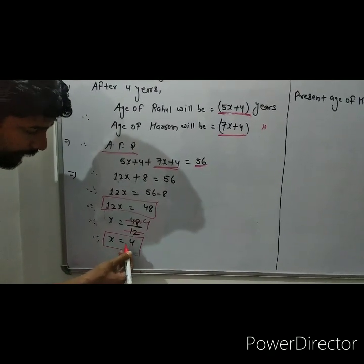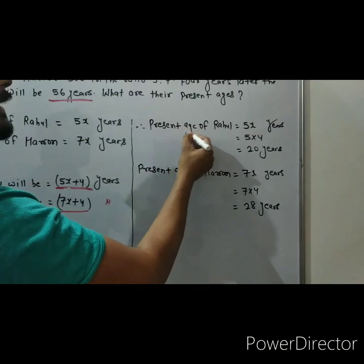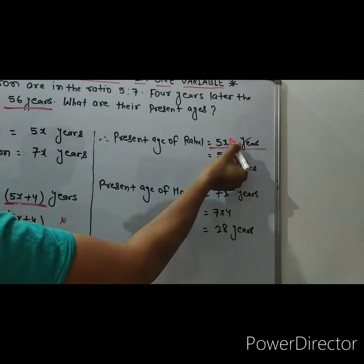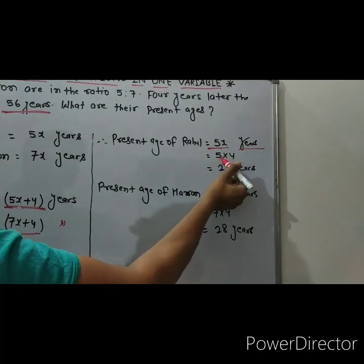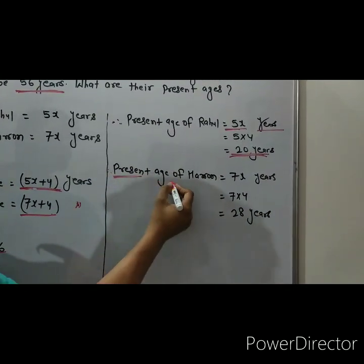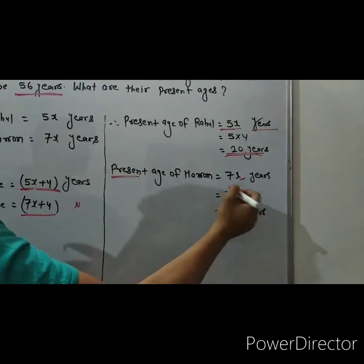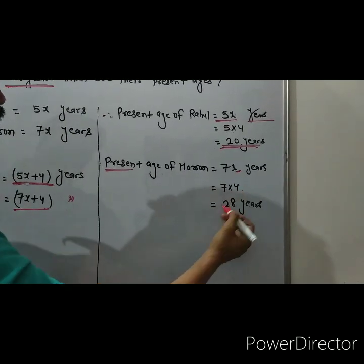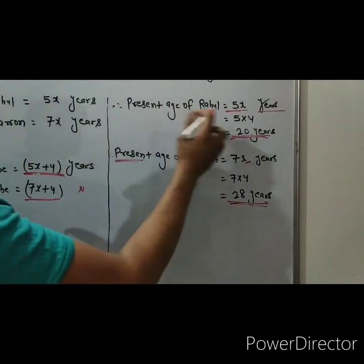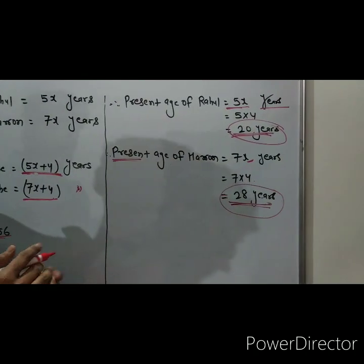Now this is the value of x. Present age of Rahul is equal to 5x years, so 5 into 4 is 20 years. The present age of Haroon is equal to 7x years, so 7 into 4 is equal to 28 years. These are the present ages of Rahul and Haroon.